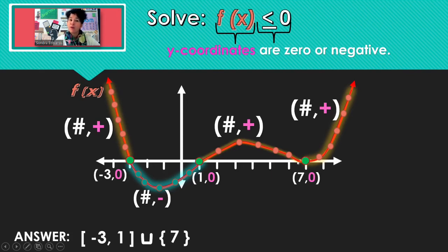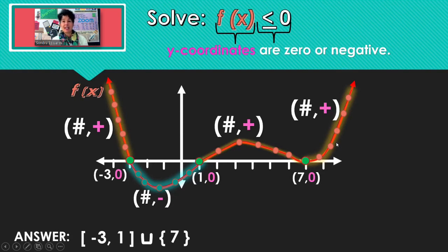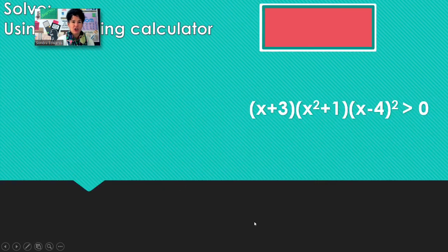Because before 7, those x's are not generating y-coordinates that are 0 or negative. And after 7, those x's are not generating y-coordinates that are 0 or negative. So we're only using the number 7 — you say union, just the number 7.